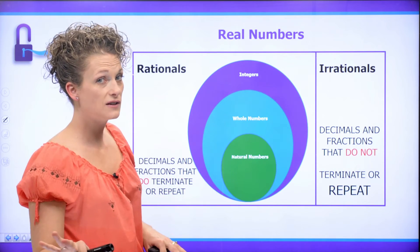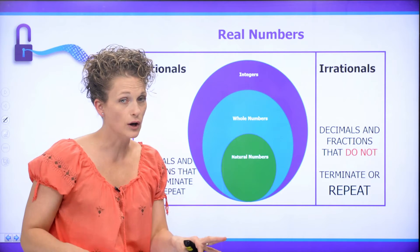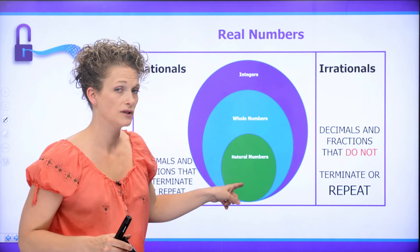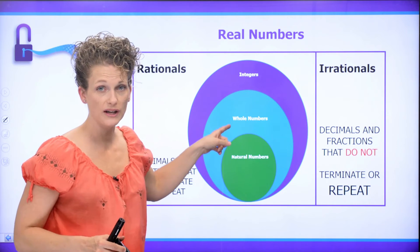What about integers? Well, integers have negative numbers plus the zero plus all the positive numbers. So if a number is a natural number, it's also a whole number and it's also an integer.